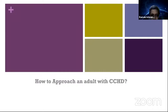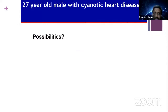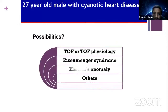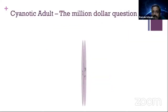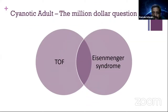The basic tips and tricks: how do you approach an adult with CCHD? The possibilities are TOF or TOF-like physiology, Eisenmenger syndrome, Epstein's anomaly, and others. In a nutshell, the million-dollar question is: is it tetralogy or Eisenmenger syndrome? Because Epstein has very typical features on examination. The most common thing you will encounter is either a tetralogy or an Eisenmenger syndrome.